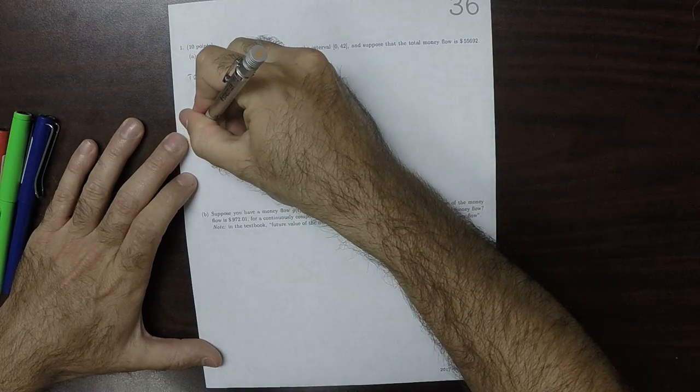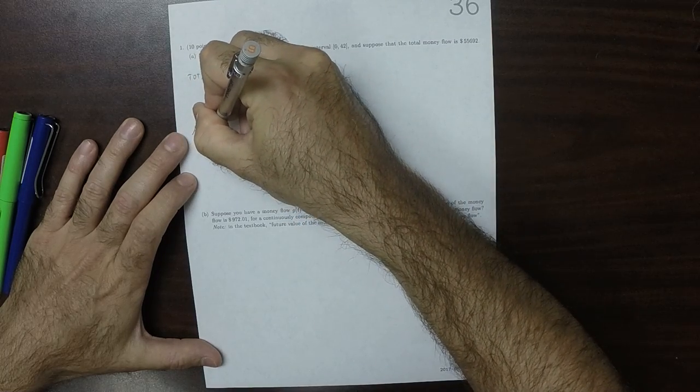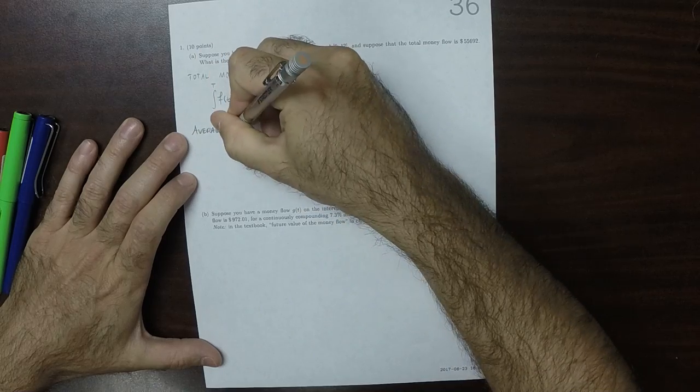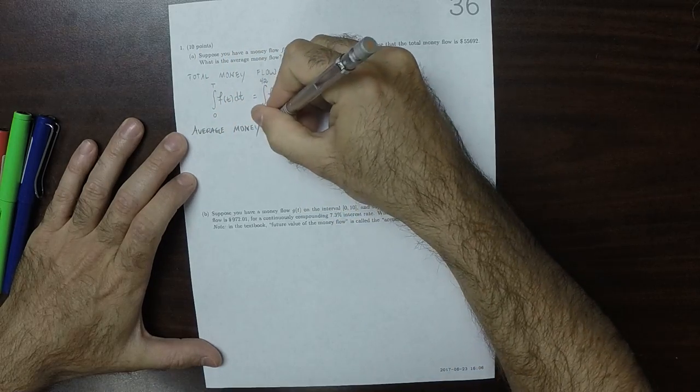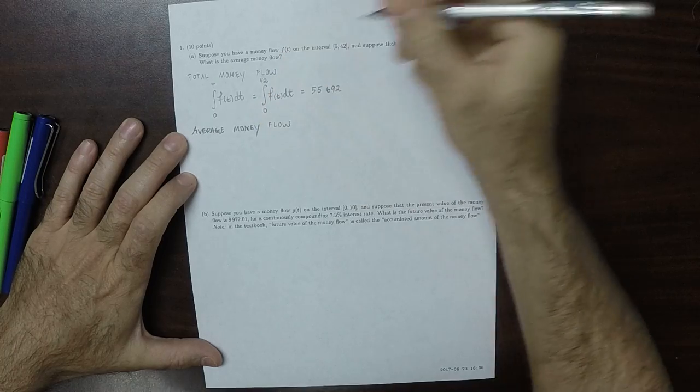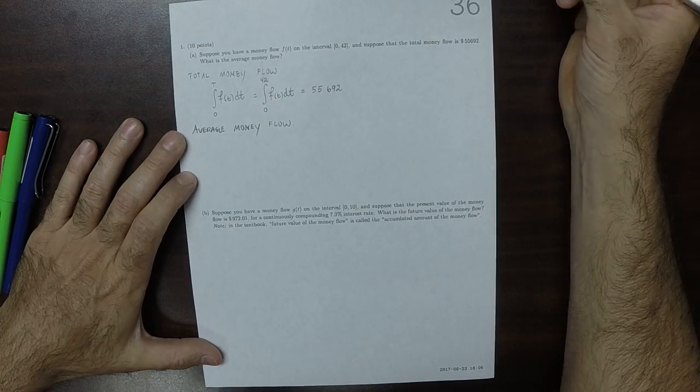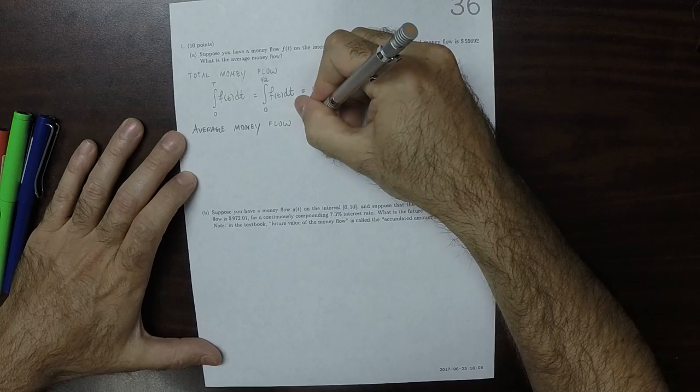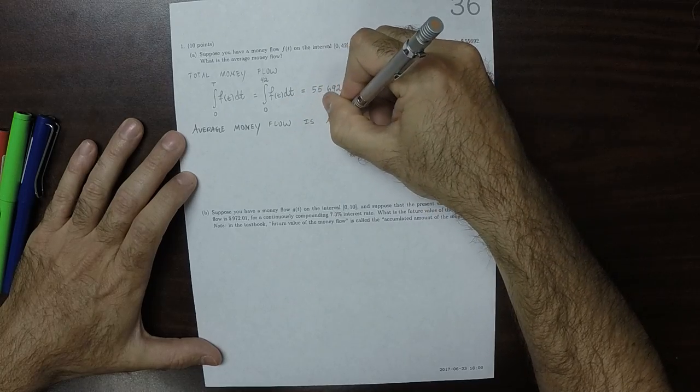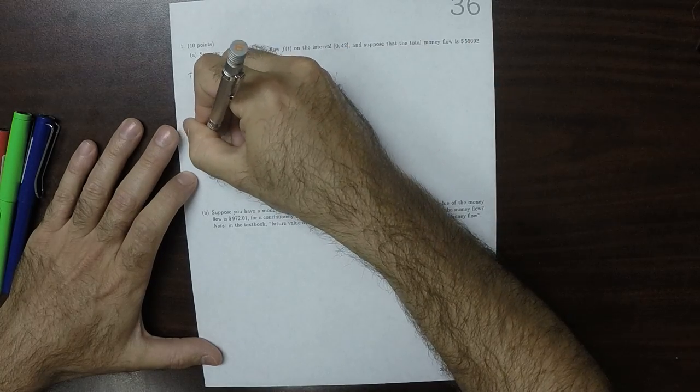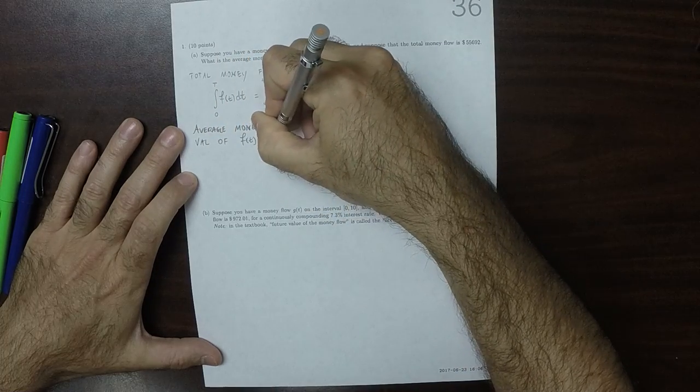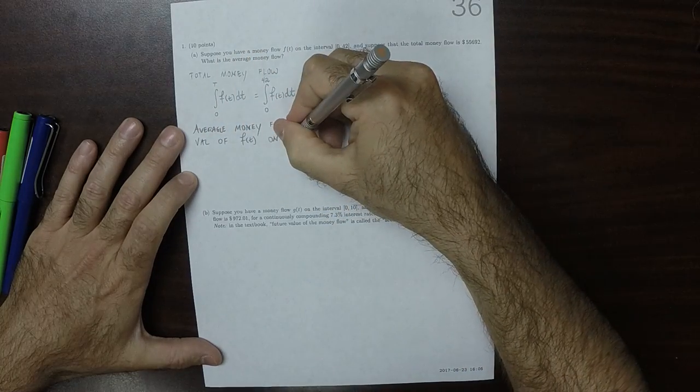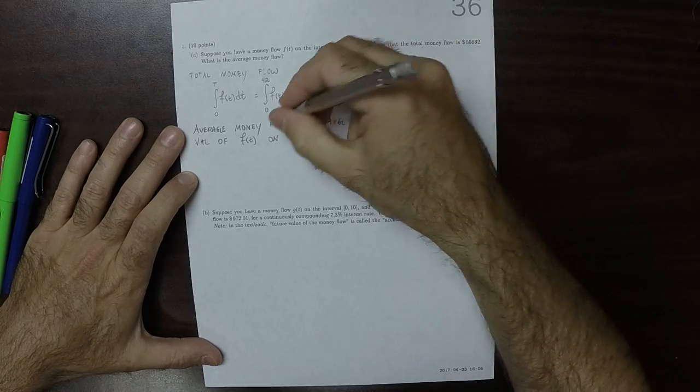Average money flow. Well, that's the average value. So this is the average value of f of t on the interval 0 to 42.